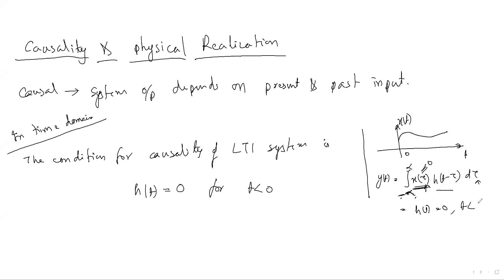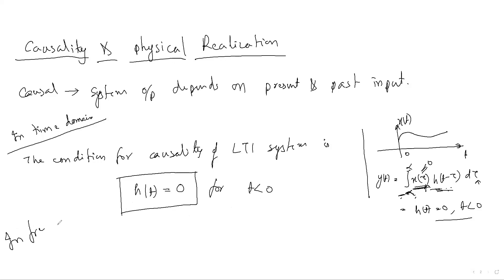Because multiplication is involved in the convolution integral, h(t) must also be zero for t less than or equal to zero. This is the time-domain condition you must remember: for a causal system, h(t) equals zero for negative time. In frequency domain, there is also a condition.